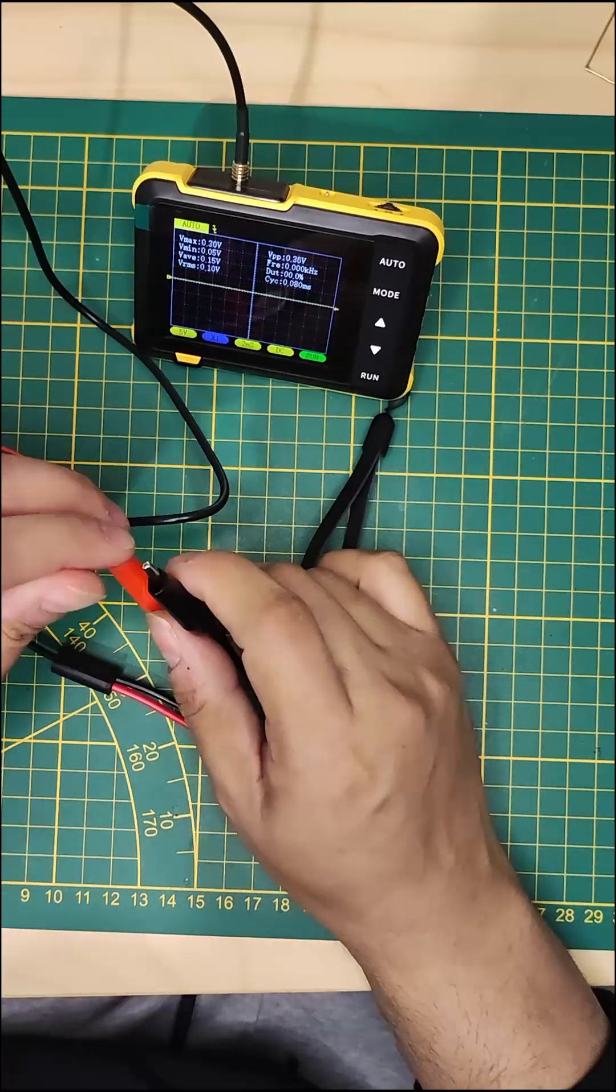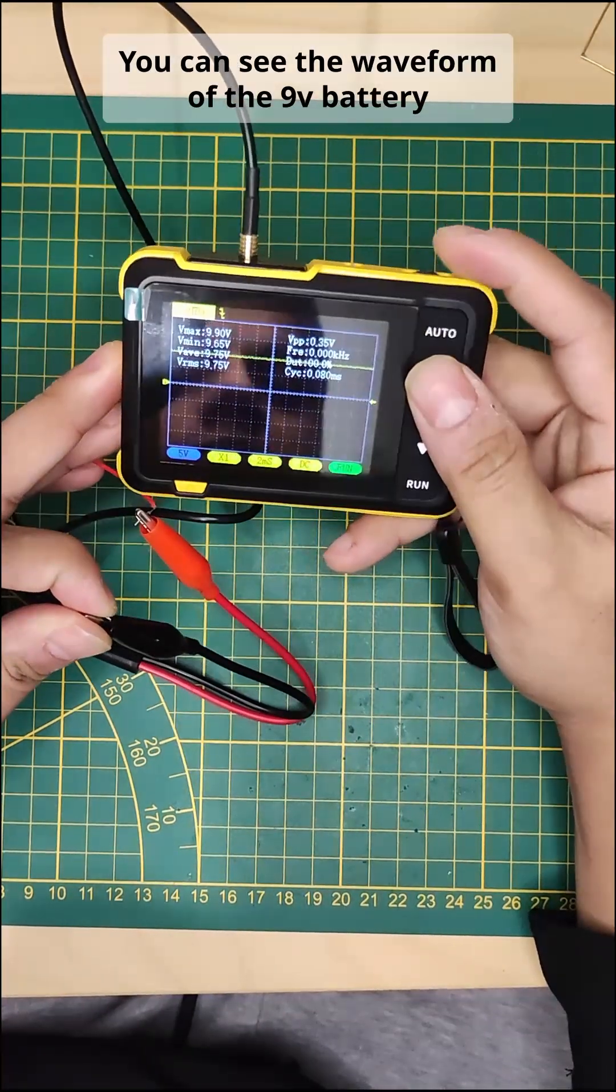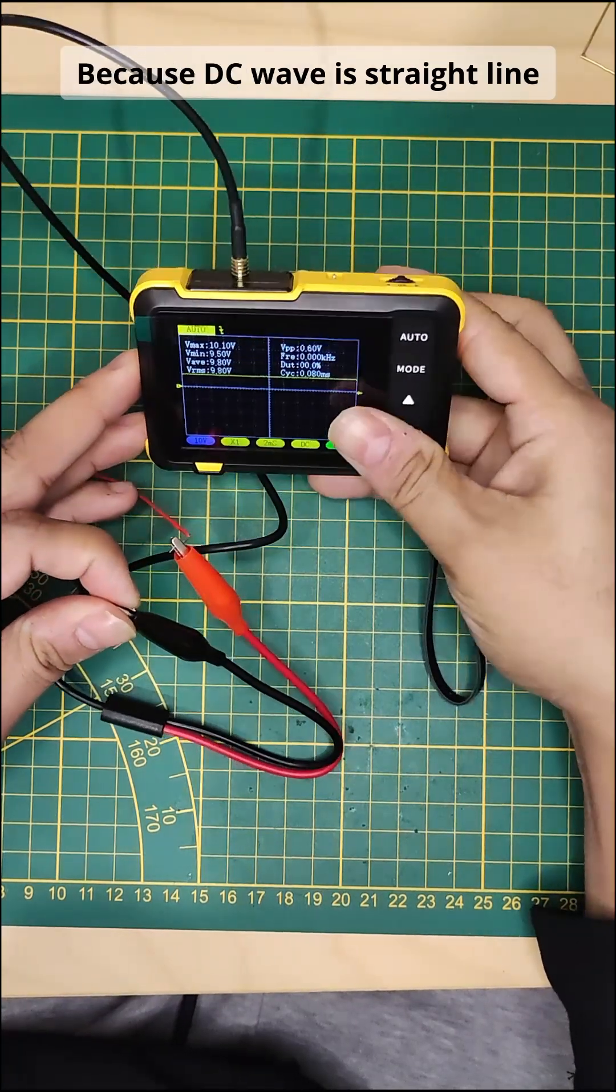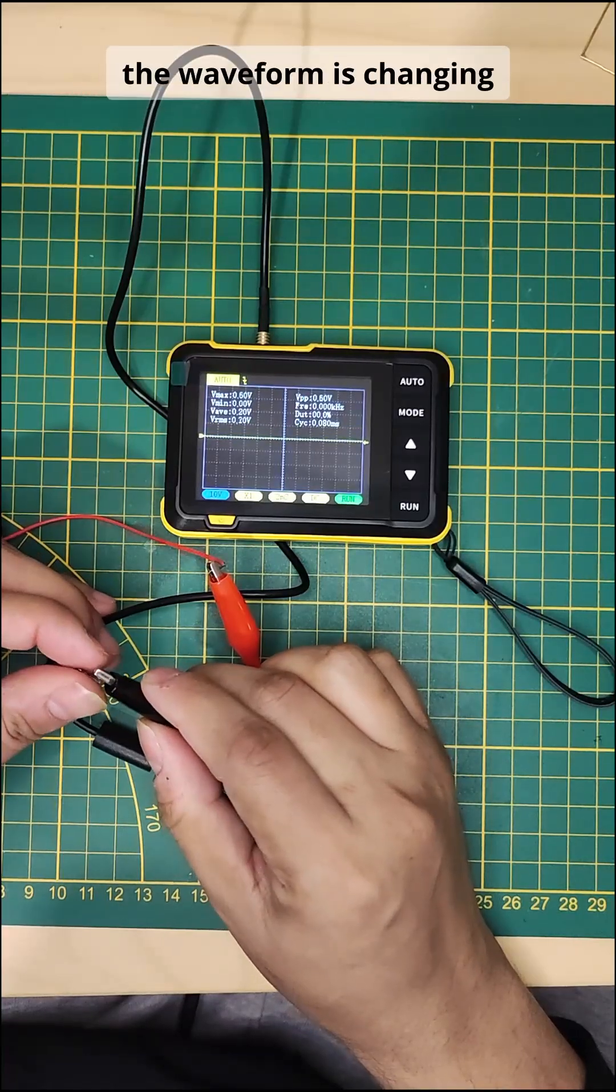You can see the waveform of the 9 volt battery. It's basically just a straight line because DC is a straight line. When I tap it, you can see the waveform is changing.